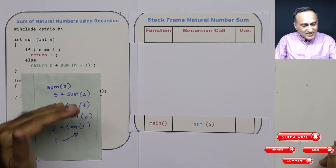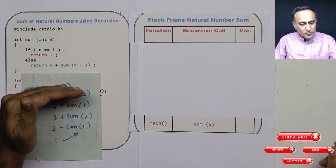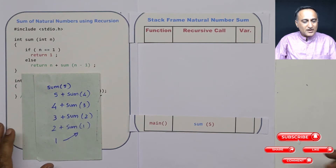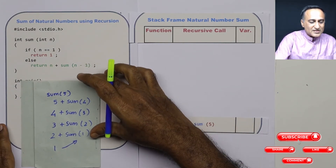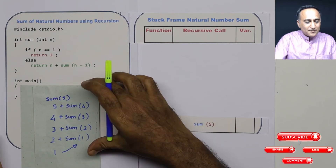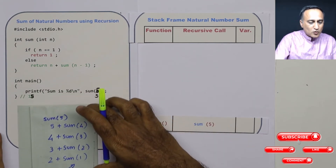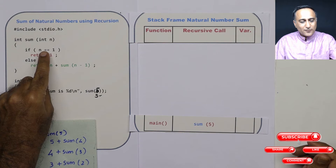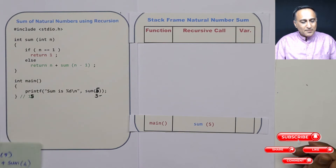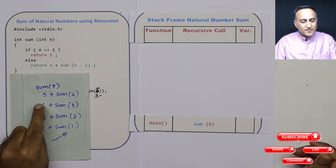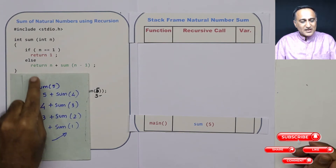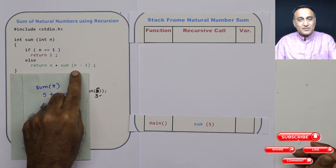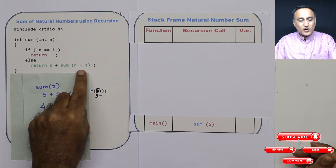This same thought process is going to be used to break down this problem into simpler steps. When sum is called with the value 5, the condition 5 equal to 1 is false, so I am doing exactly that: returning 5 plus the sum of all numbers from 1 to 4.